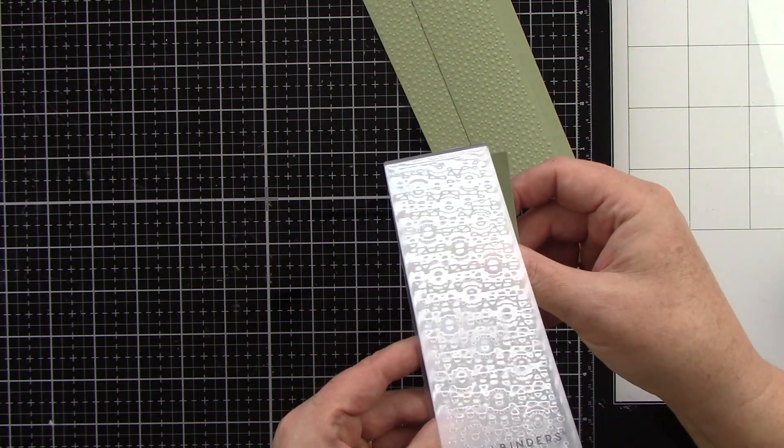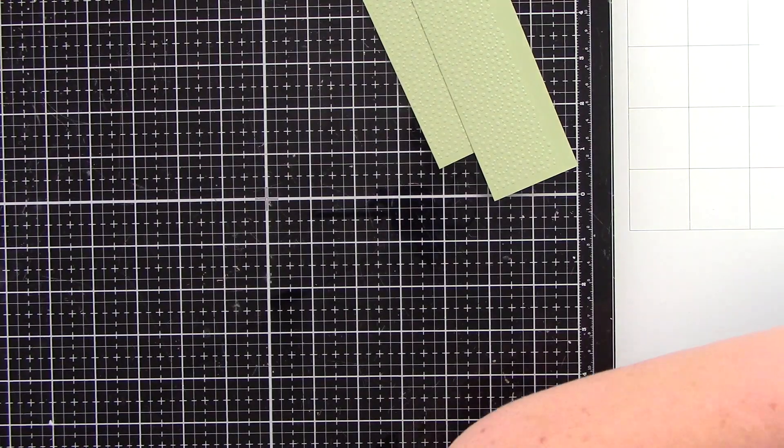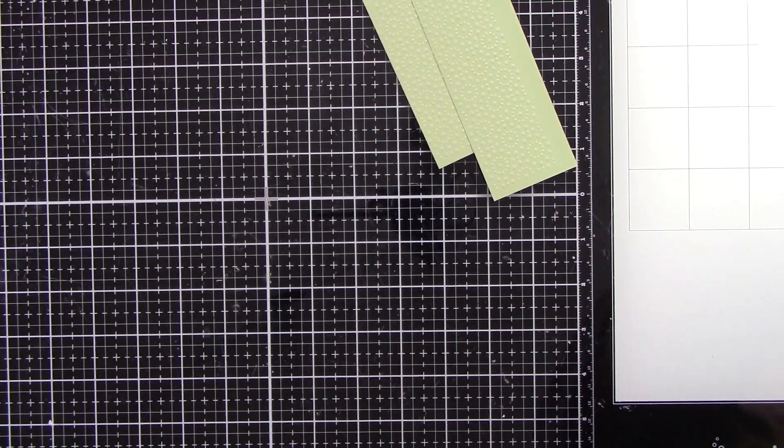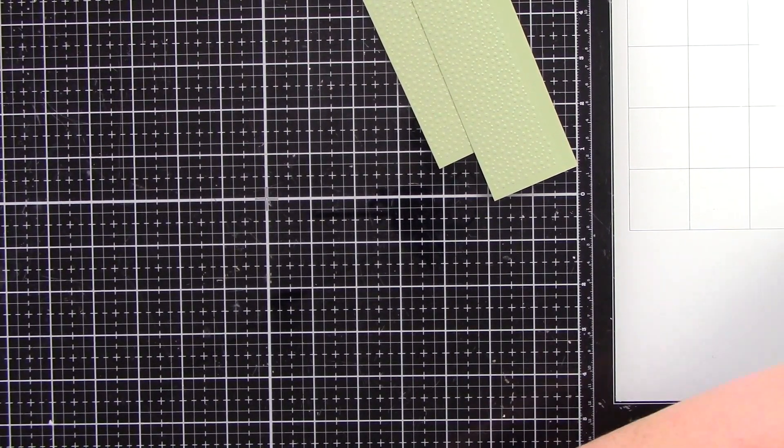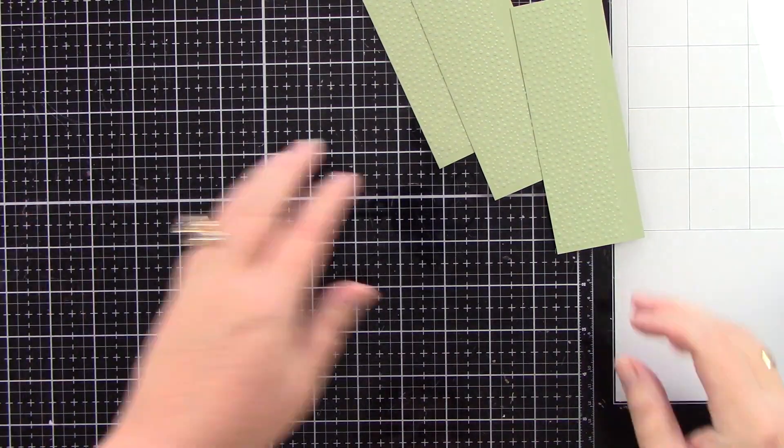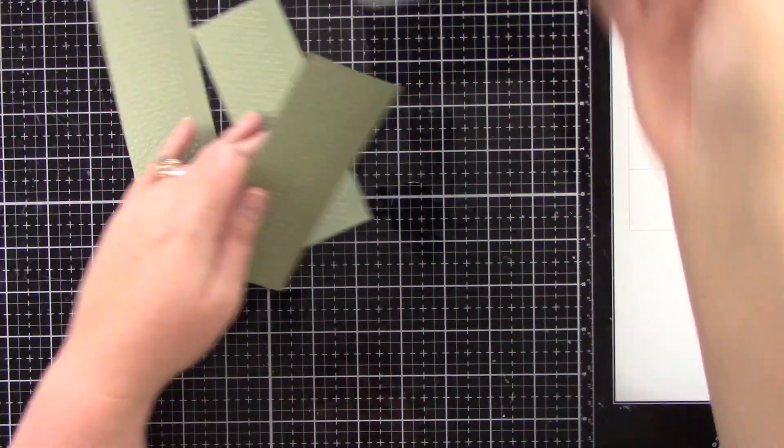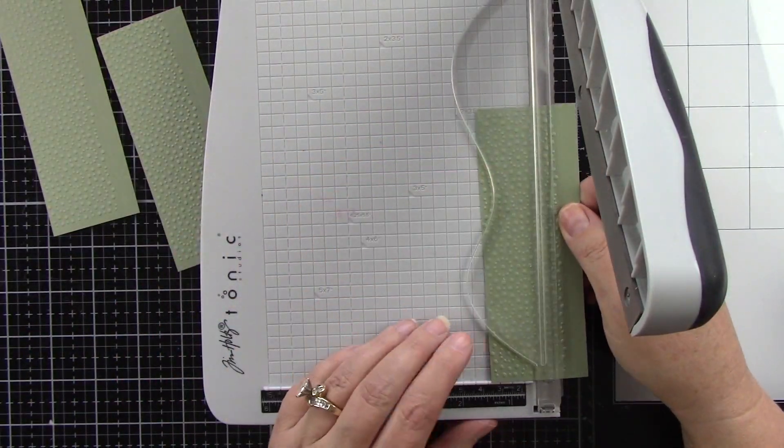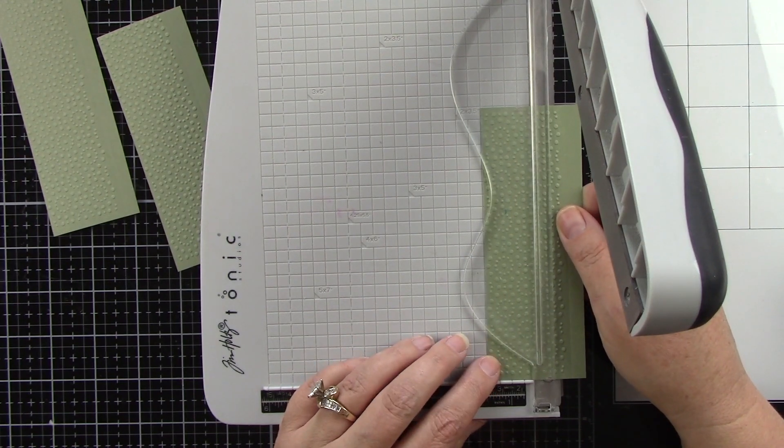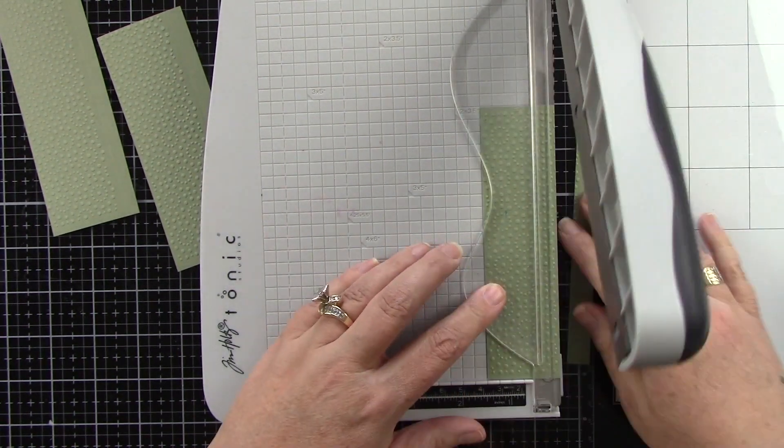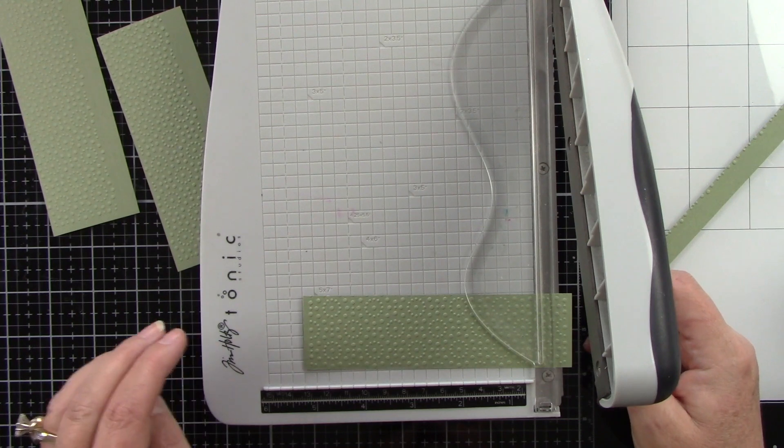Some of the 3D embossing folders are really thick compared to other 3D embossing folders. So I am using the universal plates and it has all the directions of what type of sandwiches you need for what and I would recommend getting them because it really has been a lifesaver.